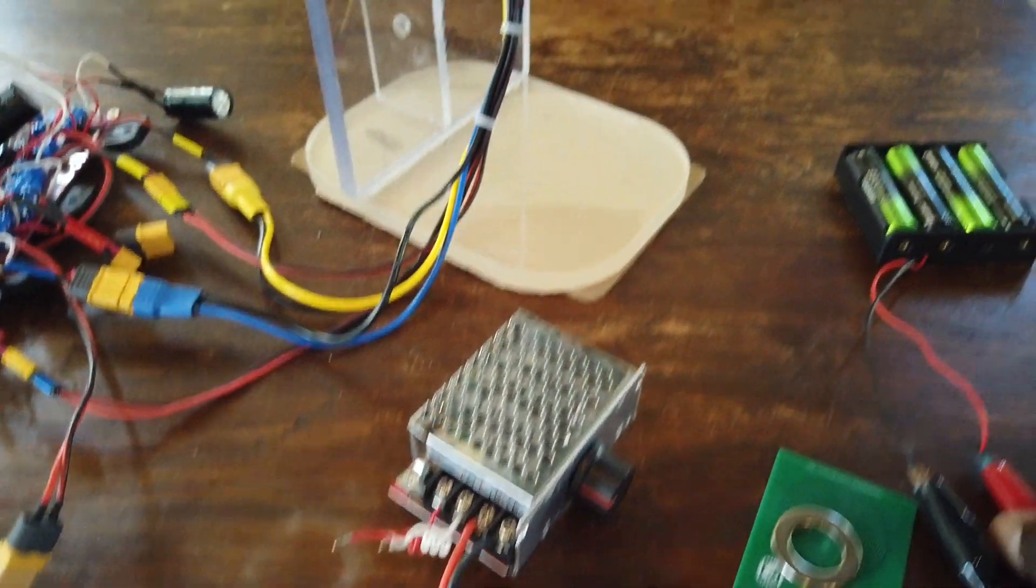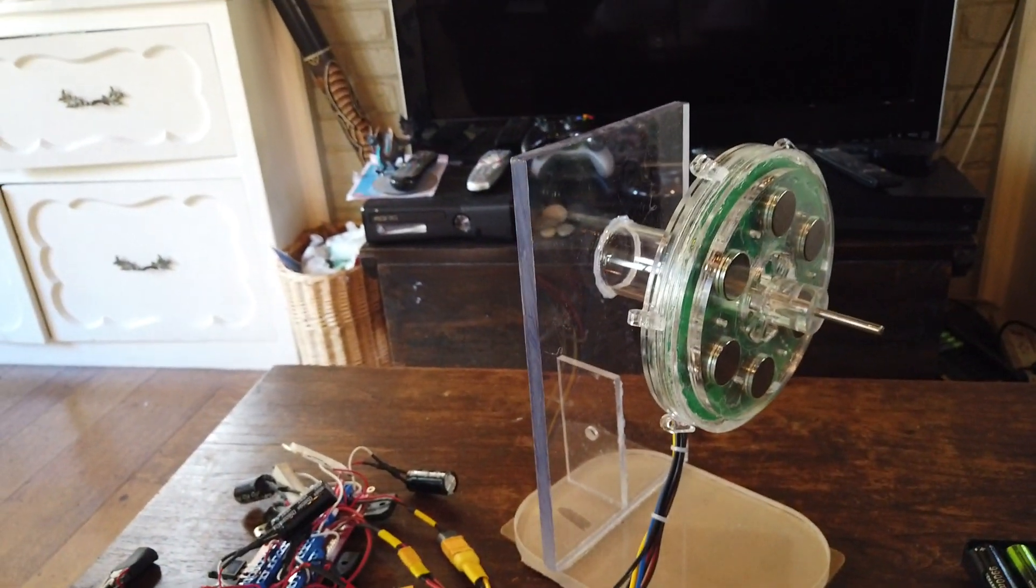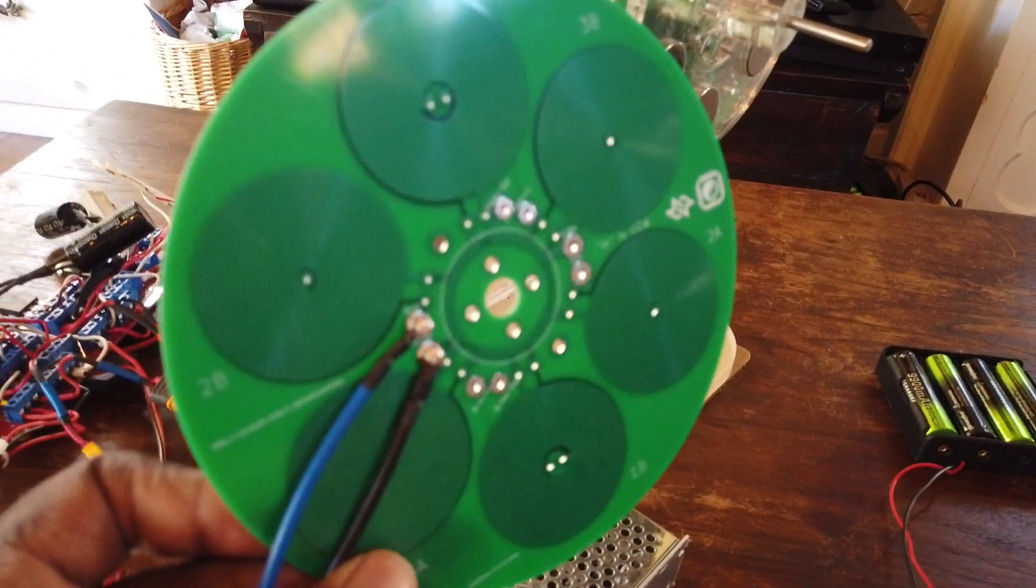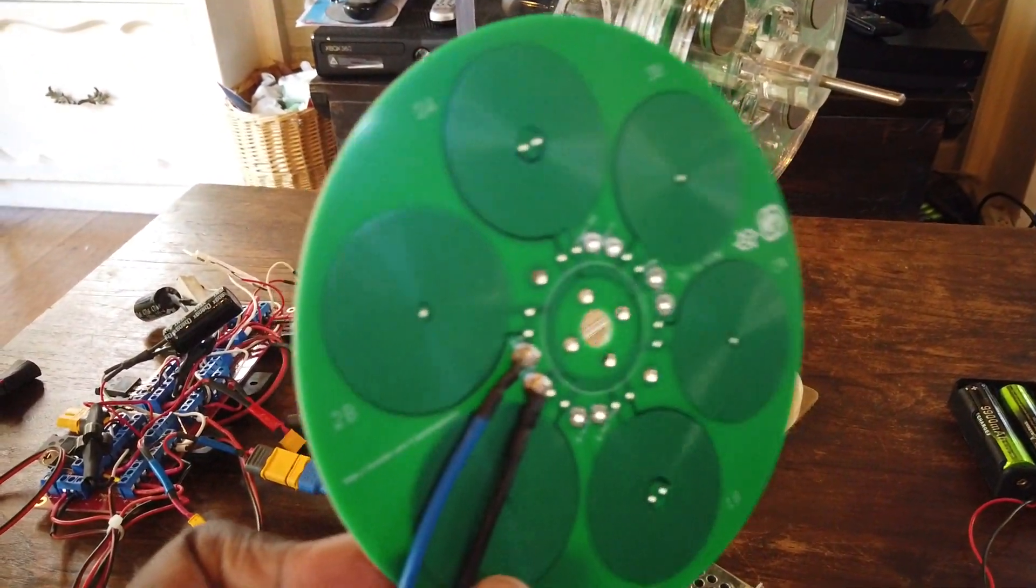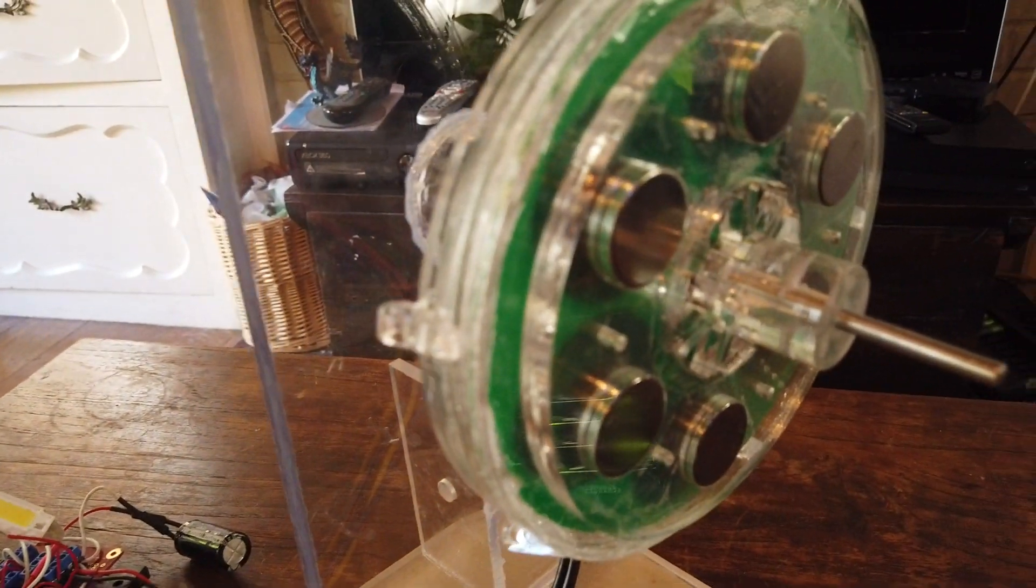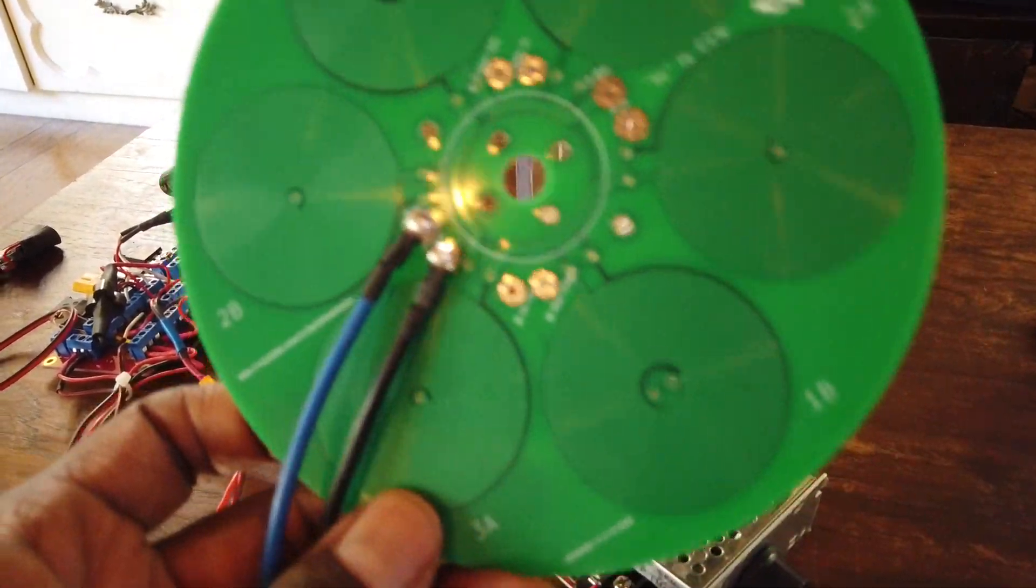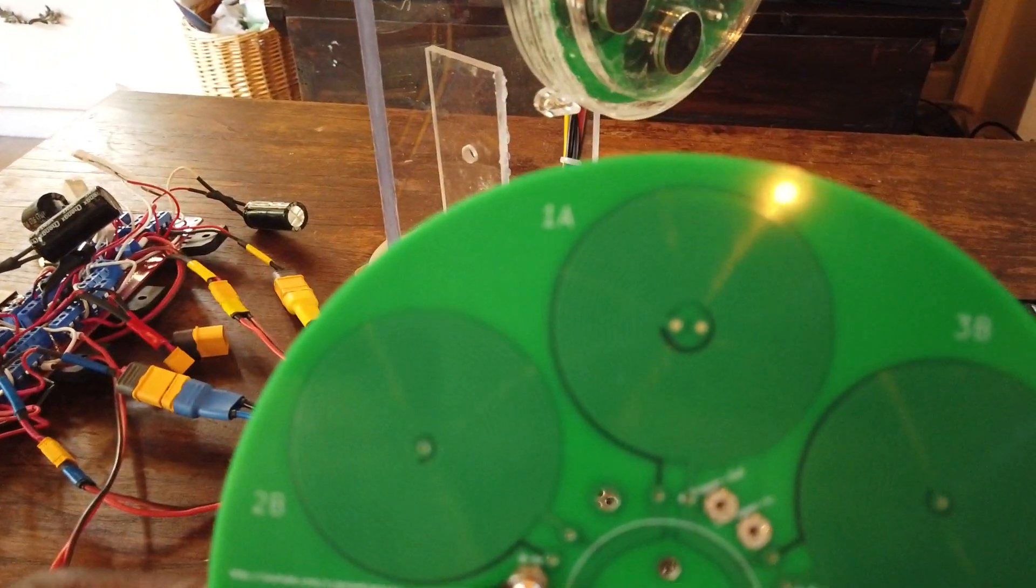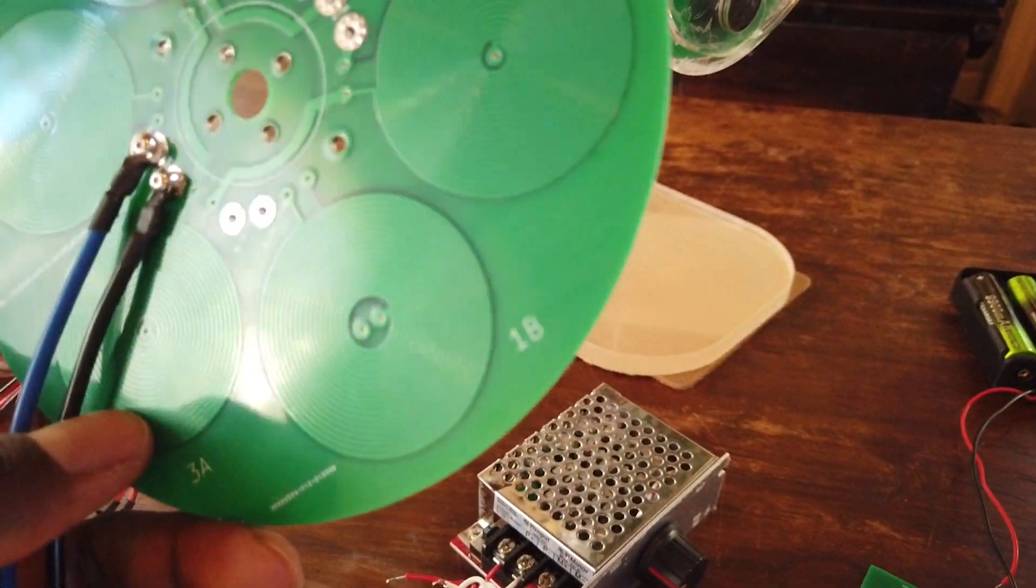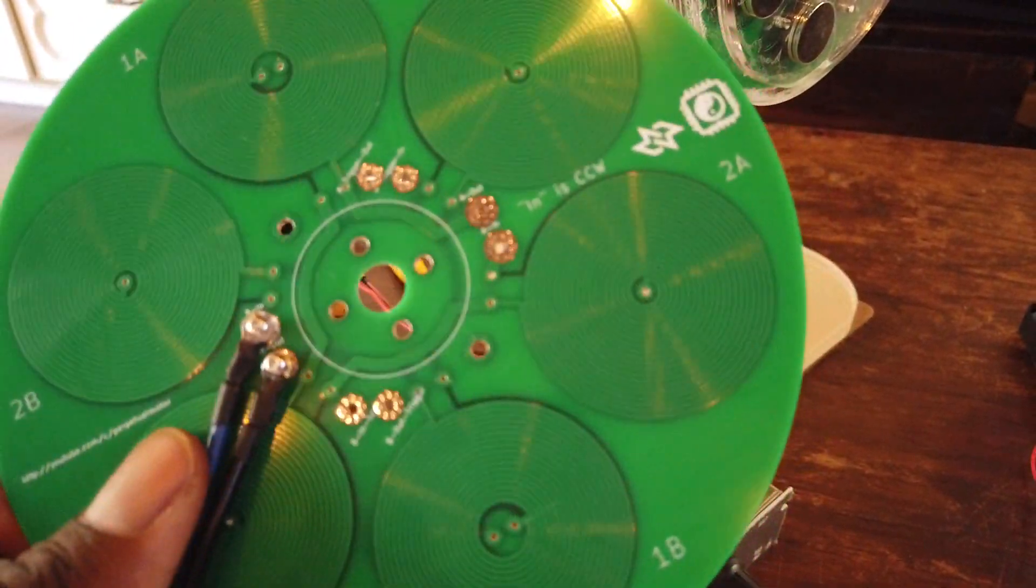And because that worked, I went ahead and started doing some more work with PCBs and I ended up building this. This is what's acting as the stator in this motor. You can see it has six coils and they're labeled 1A through 3A, 1B through 3B. Each set of three is working on a different circuit like in my other motors.